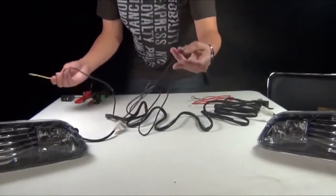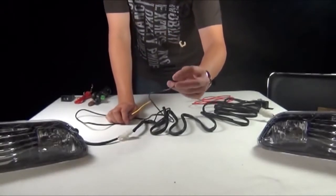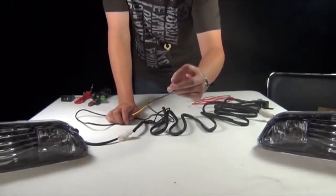Now one end you have a black wire which is the negative wire, and you will ground this to the frame of the car.